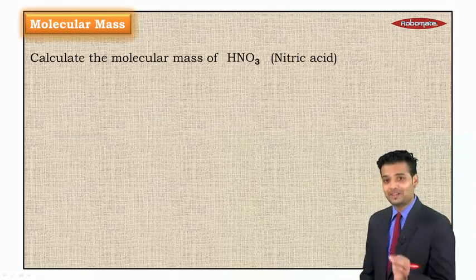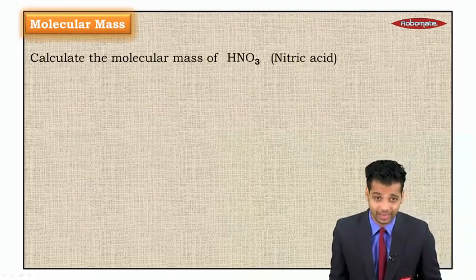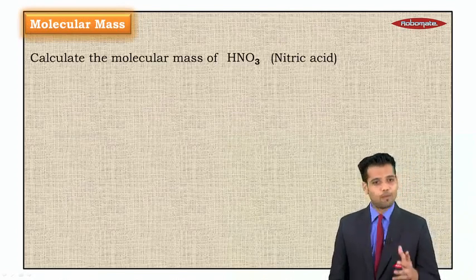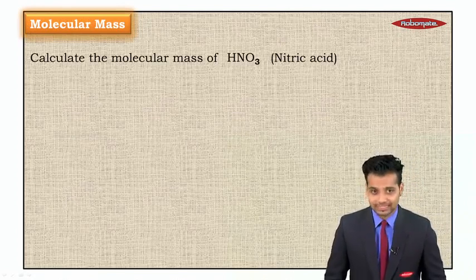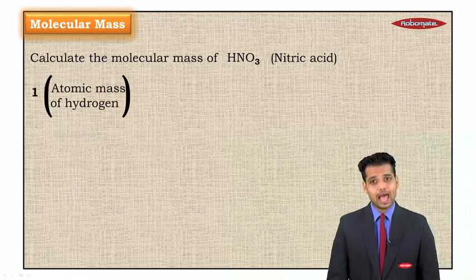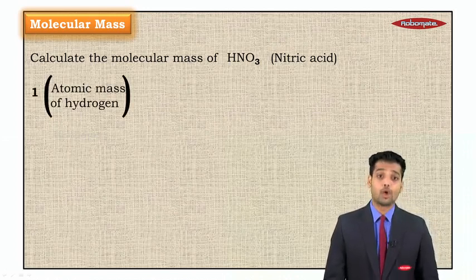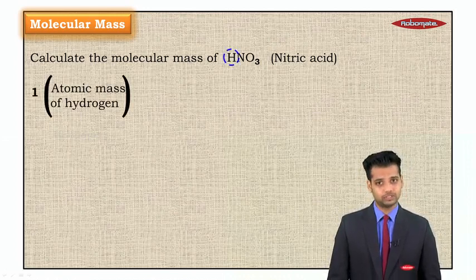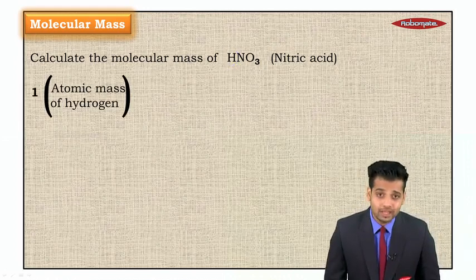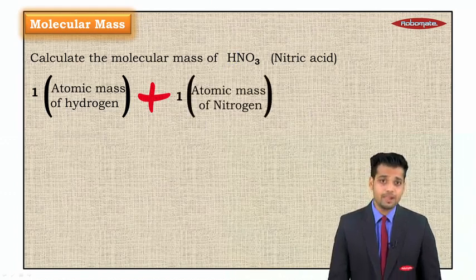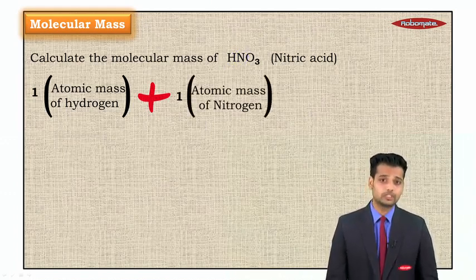Now molecular mass. Calculate the molecular mass of HNO3. How would you do that? What is HNO3? It is nitric acid. Now HNO3. Can I say it contains one hydrogen, one nitrogen. So you will add one hydrogen plus one nitrogen plus three oxygens.